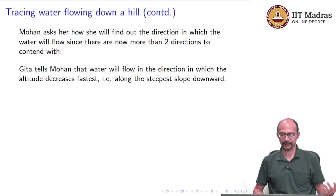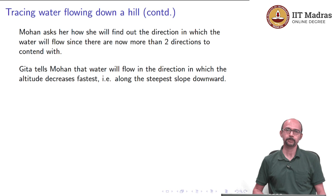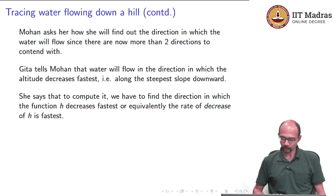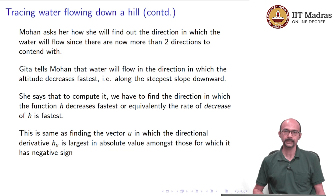Gita says it is the same principle: water will flow along the steepest slope, which is when the altitude decreases fastest. To compute this, rather than taking h prime, we use the directional derivative, which gives the rate of change in a particular direction. She says we must find the direction in which the function h decreases fastest, or equivalently where the rate of decrease of h is greatest. The directional derivative h_u should have a negative sign — because we want h to decrease — and its absolute value should be largest.